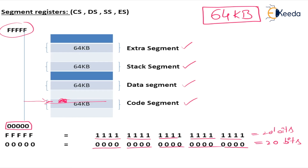Please remember: segment registers are located in the bus interface unit, not the execution unit. A segment register holds the starting address of that particular segment. For example, if the starting address is 0000000000, that value is stored in the segment register. The segment register size is 16 bits.